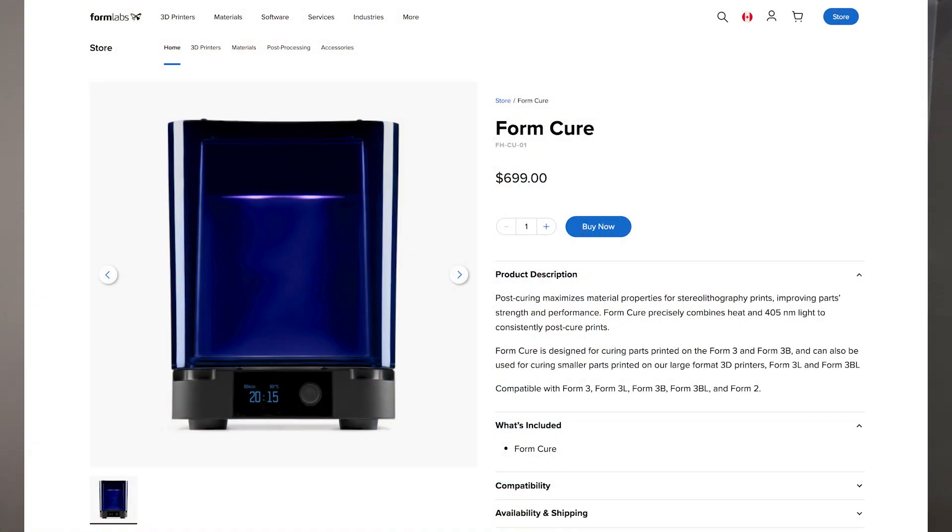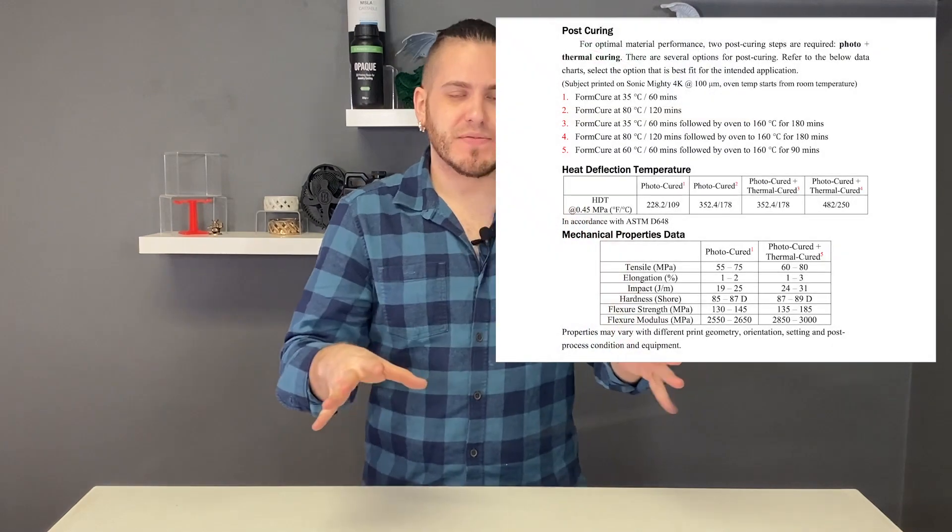Apply Labs uses, well I guess in their testing they use the Form Cure machine, which is a post-processing thing from Formlabs that basically has UV LEDs that cure the resin on the outside and I assume have some kind of penetrative ability. But moreover, it also has a heated chamber up to 80 Celsius, which is quite high. Now they have a whole breakdown of this on their website of the different steps that you can take.